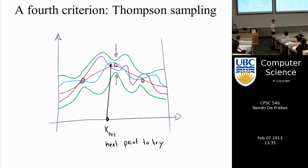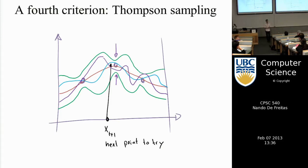I'm doing this here in the context of Gaussian processes, but I shared a document in the Google group about what folks at Google Analytics do — they use exactly Thompson sampling to make decisions.